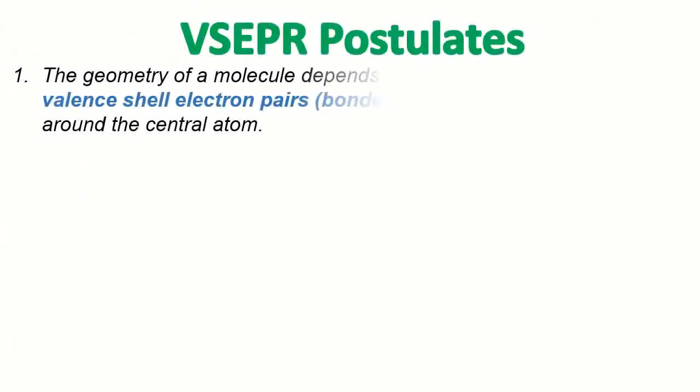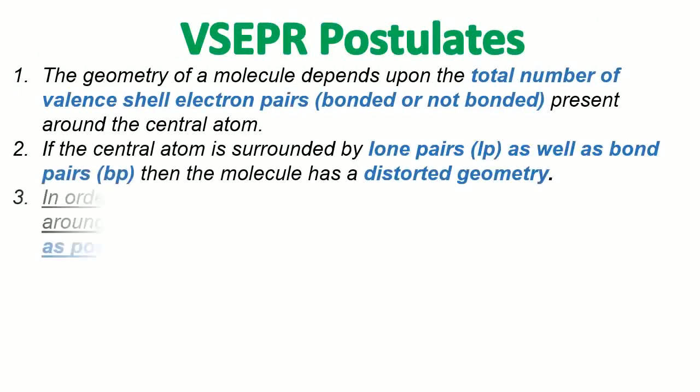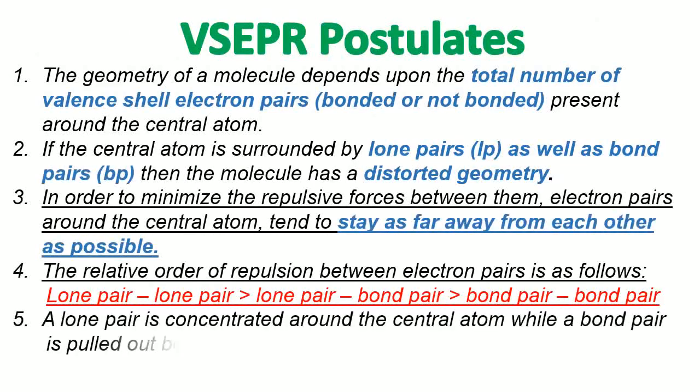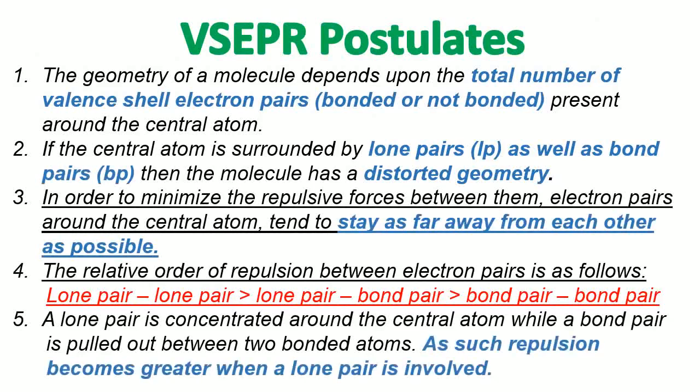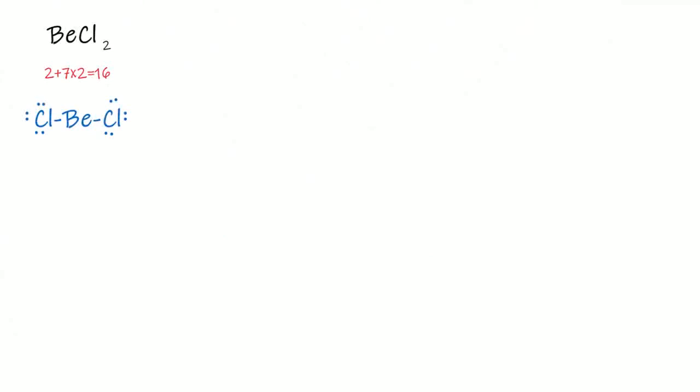Here are some postulates of VSEPR theory. We shall use all these postulates in our next examples. When we solve examples and predict shapes of molecules by using these postulates, then you will easily understand. For the prediction of shapes, we have to draw Lewis structures first, after that we shall use VSEPR theory. I have explained all the process in my previous video, so if you didn't watch it and don't know how to draw Lewis structures, please watch that video first.